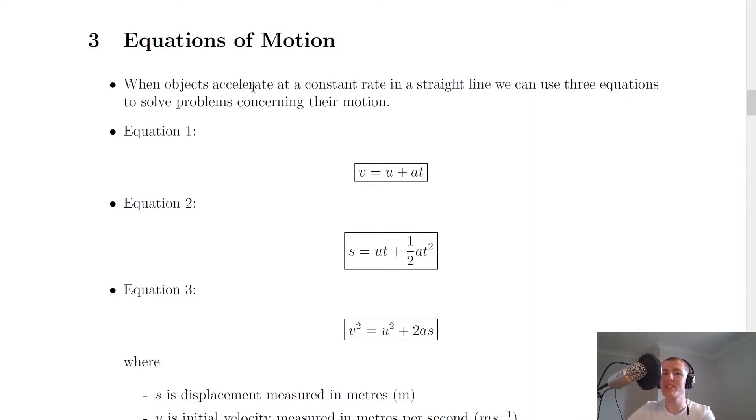Now it says in the notes here that when objects accelerate at a constant rate in a straight line, we can use three equations to solve problems concerning their motion. And these are known as the three equations of motion. So these equations are only used when we've got a constant acceleration and we've got motion in a straight line. Anything harder than that will not be in the higher physics course.